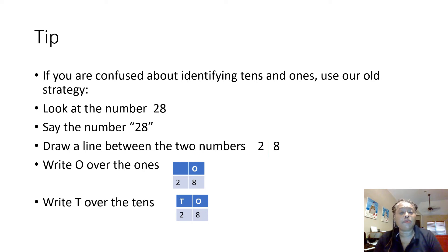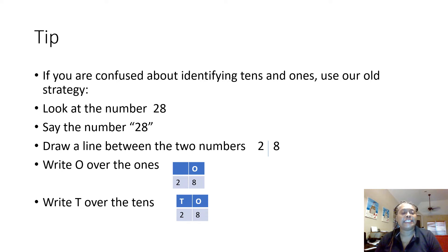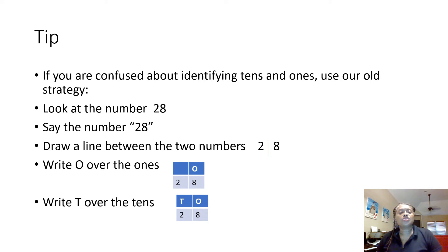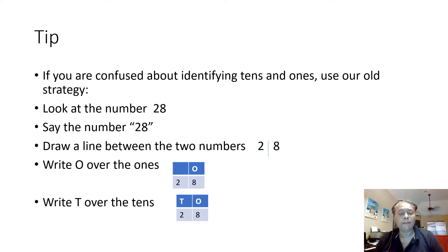Tip: If you're having problems identifying your tens and ones, let's use an old strategy. Look at this number — say the number. The number is twenty-eight. Draw a line between the two and the eight to separate tens from ones. Our tens are always in the front and our ones are always at the end. Over the eight, write an O for ones; over the two, write a T for tens. So in twenty-eight, we have two tens and eight ones.